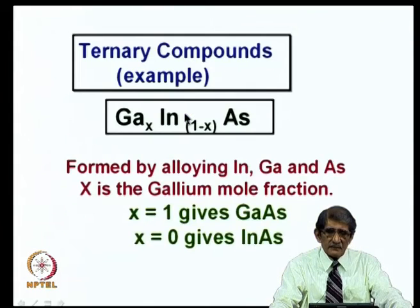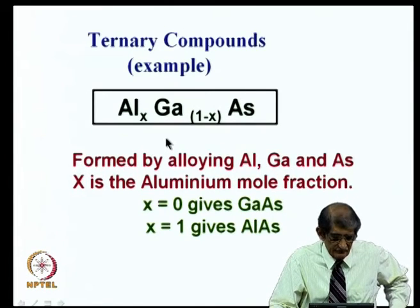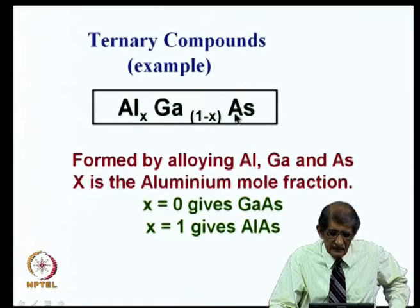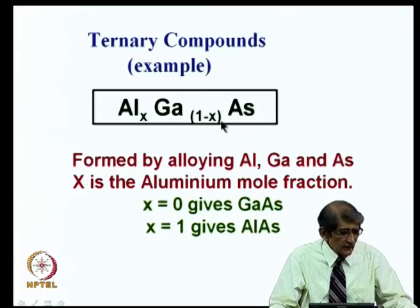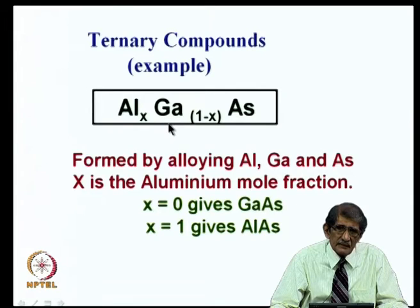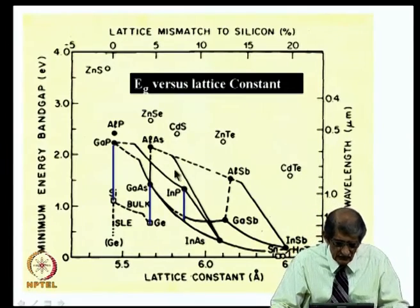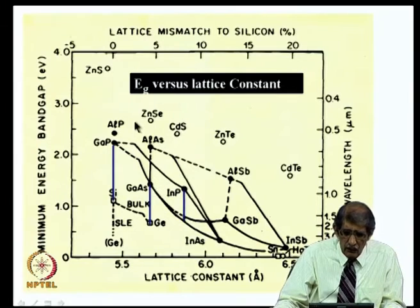Both will be direct bandgap semiconductors. Another popular ternary compound semiconductor is aluminum gallium arsenide. X equal to 0 gives gallium arsenide, and x equal to 1 gives aluminum arsenide. You can change the bandgap of gallium arsenide by replacing gallium with aluminum atoms — that is aluminum gallium arsenide. You can mix these materials; for example, grow gallium arsenide on aluminum arsenide, or grow aluminum arsenide on gallium arsenide, to make heterostructures based on two different materials.